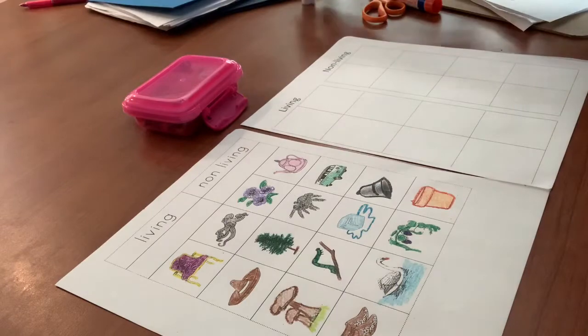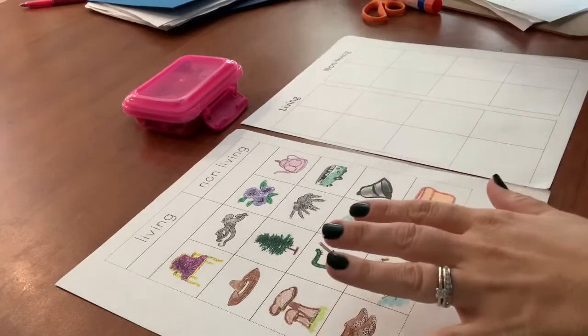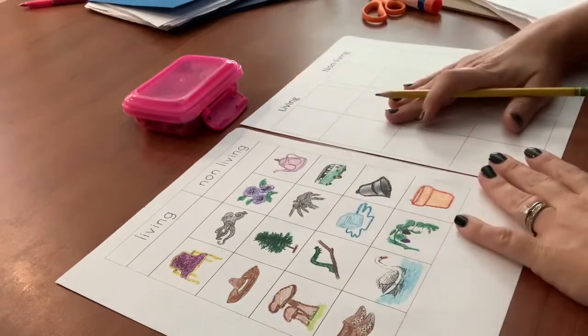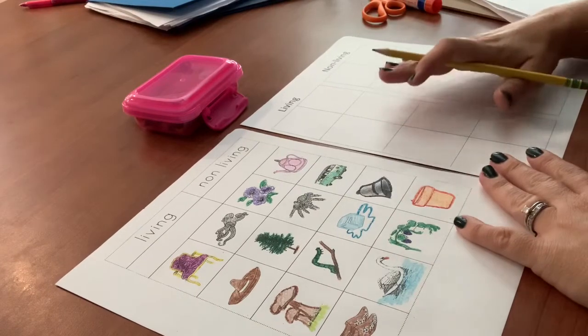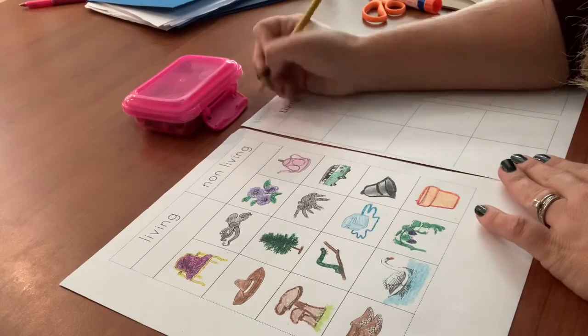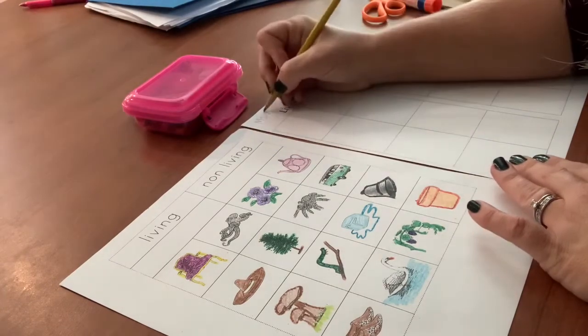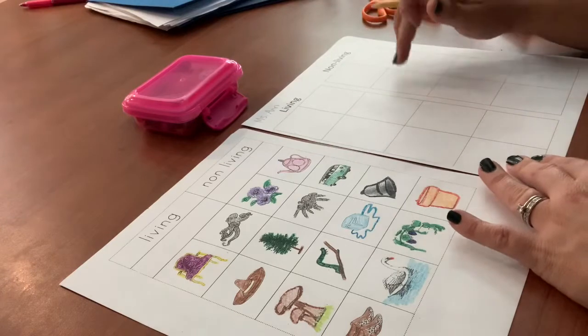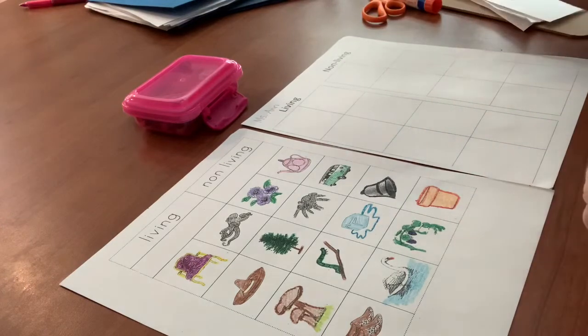Now I have all of my pictures colored and this is the sheet in which I'm going to sort them onto. So the first thing I'm going to do is put my name on this sheet with the blank squares because were we in the classroom this is what you would be turning in.